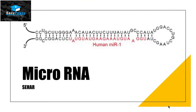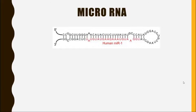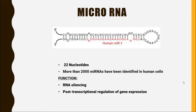Hello friends, this is Seher from EZPZ and the topic we are going to discuss today is microRNA. MicroRNA belongs to the category called small non-coding RNA, as they have only 22 nucleotides in it. More than 2000 miRNA have been identified in a human cell.